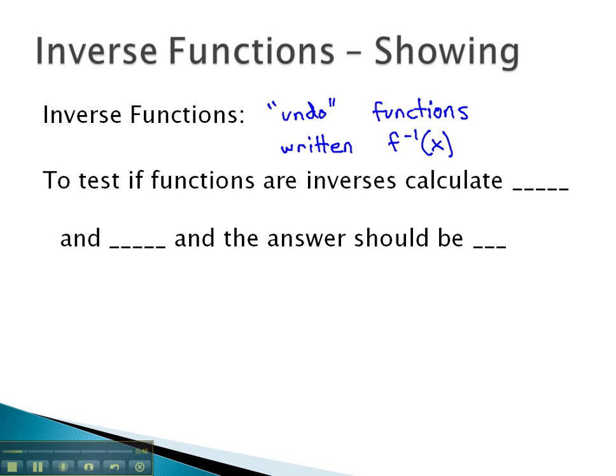If inverse functions undo each other, we can test functions to see if they're inverses by calculating the composition f(g(x)) and g(f(x)). And while the first function might change x, the second will take it right back to x. If both of these simplify to x, we have inverse functions.